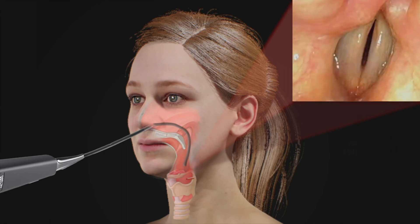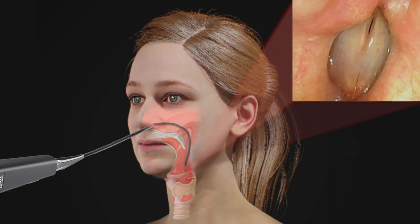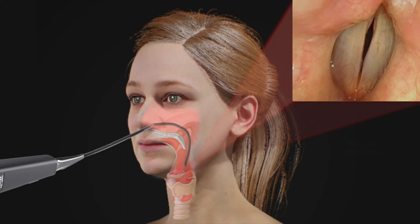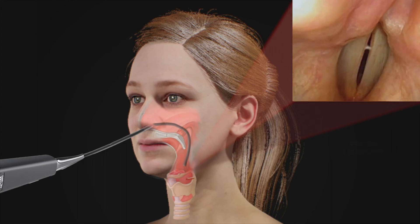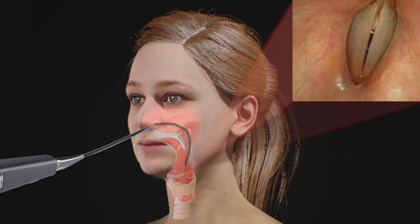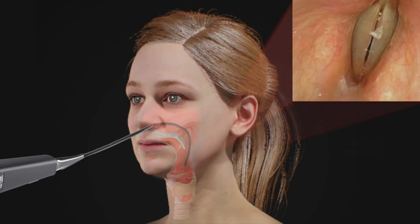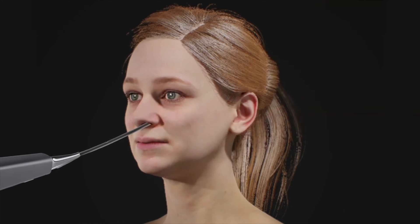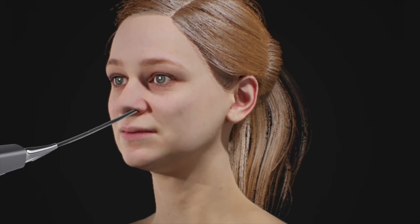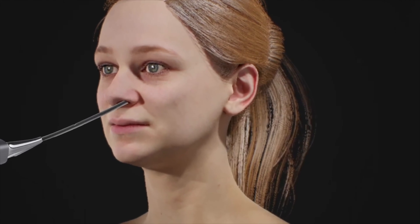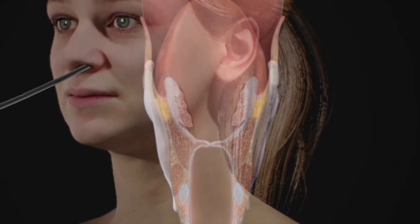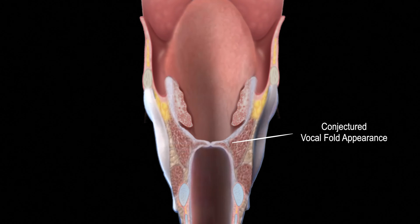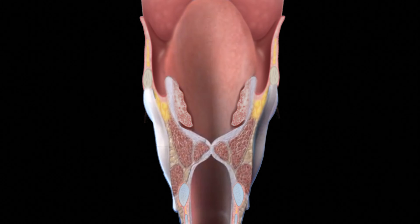With such a top-down view, the vocal folds appear to be V-shaped thin membranes that vibrate against each other. However, such a simplistic two-dimensional view is actually incorrect. Rather, when the vocal folds are seen in cross-section, instead of being a thin band-like structure, they are actually a wedge-shaped triangle.